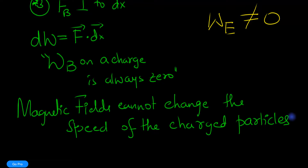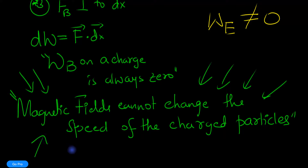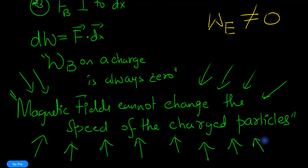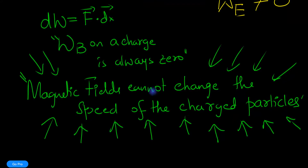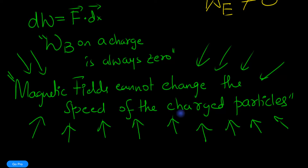I can't stress this enough: the magnetic field — whether uniform or non-uniform — cannot change the speed of a charged particle. It cannot increase or decrease the speed, and it cannot increase or decrease the kinetic energy of a charged particle. That's why we're not going to talk about magnetic potentials, because that would be useless for us. Of course, in advanced electromagnetic field theory we do use magnetic potentials, but that's not important here.